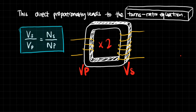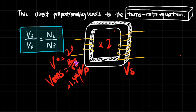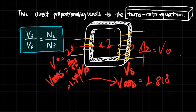If the initial alternating voltage has a V₀ of 2 volts, then we know that V_rms equals 2 divided by √2, which gives 1.414 V. Since the secondary coil has double the turns, the V_rms in the secondary will be double, equalling 2.828 V. Alternatively, the maximum voltage V₀ in the secondary equals 4 volts. This brings us to the turns ratio equation.